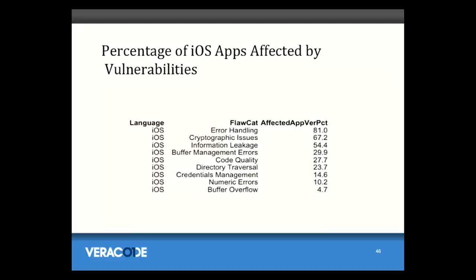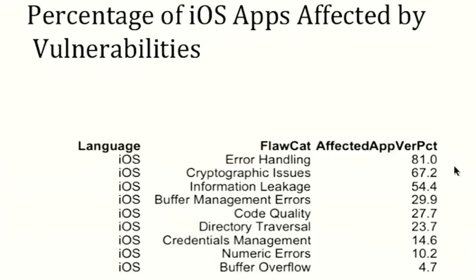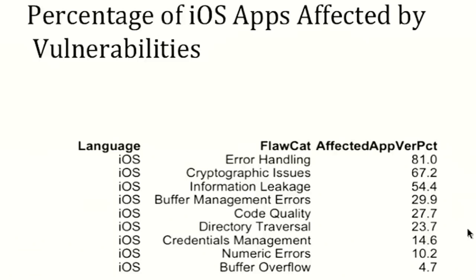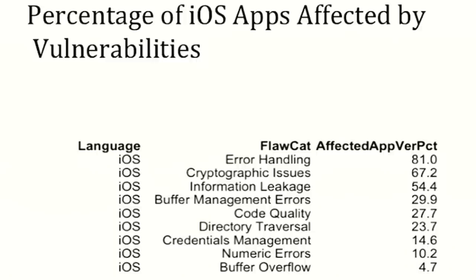For iOS: 81% had error handling issues — more of a code quality problem. 67% had cryptographic issues, not quite as bad as Android, possibly because the APIs are a bit easier or the example code is better on iOS. 54% had information leakage. About 30% had buffer management errors — places where there could potentially be a memory corruption issue. That's not as much of a problem for exploitation on iOS because all the code has to be signed, making it hard for an attacker to execute arbitrary code. And 14.6% had credentials management issues — worse than on Android, with people not handling passwords correctly.